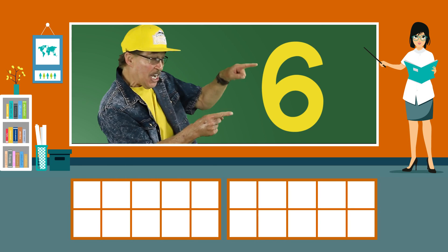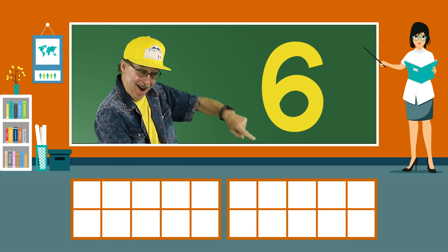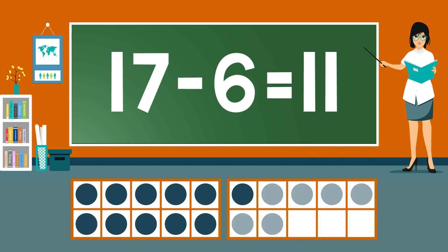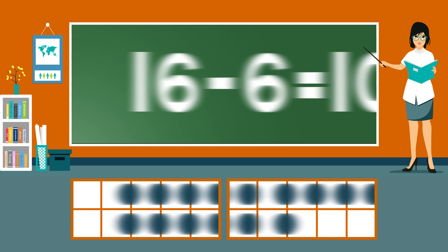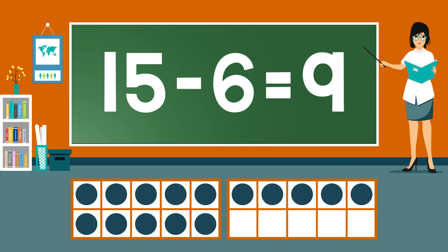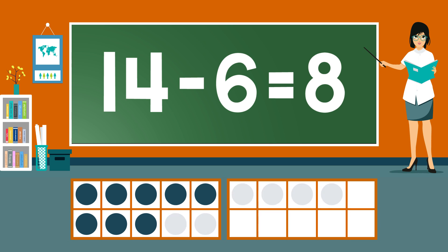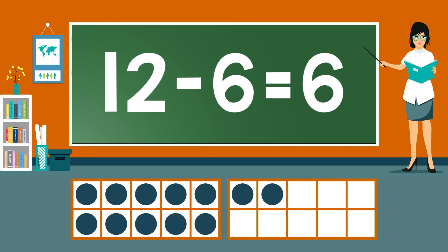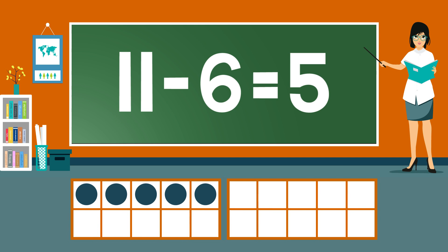Subtract 6 from each number. 18-6 equals 12. 17-6 equals 11. 16-6 equals 10. 15-6 equals 9. 14-6 equals 8. 13-6 equals 7. 12-6 equals 6. 11-6 equals 5.